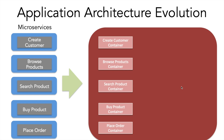Each container can run code written in different programming languages. For example, create customer might be written in JavaScript or Java, browse products and search products could be written in Python — because the browse product feature may be easier to implement in Python than Java. Place order might use a Microsoft feature, so it would make sense to write it in .NET, which is different from other components. This is a major advantage of microservices: you can use different programming languages as your application needs, leveraging the pros of each.